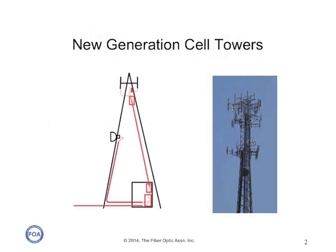The increased demand for cellular bandwidth to support fast-growing data usage from smartphones and tablets requires upgrading cellular towers. More bandwidth means more bandwidth to the towers and more antennas on the towers. Today's cell towers are being modified to replace older coax cables to the antennas with fiber optic cables, which reduces weight and cost.